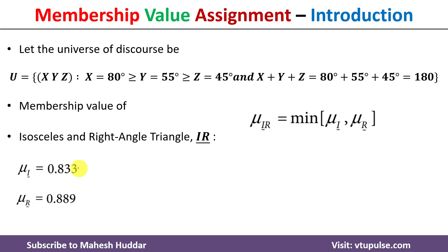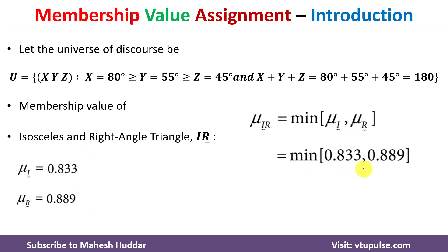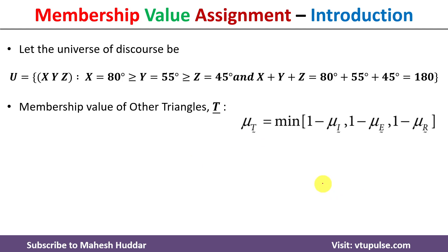Substituting those values, it becomes the minimum of 0.833 and 0.889. The minimum between these two is 0.833. So 0.833 is the membership value of the isosceles and right angle triangle.